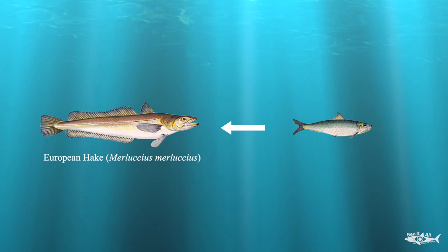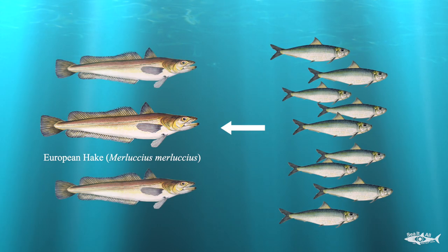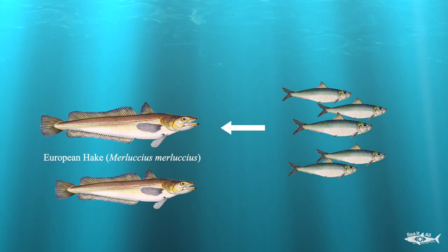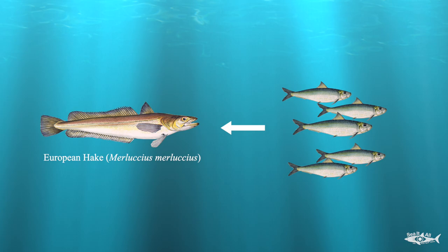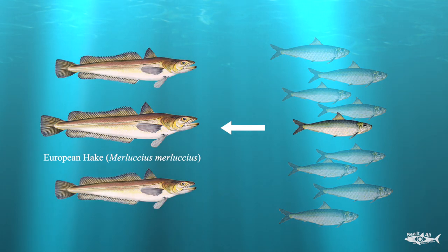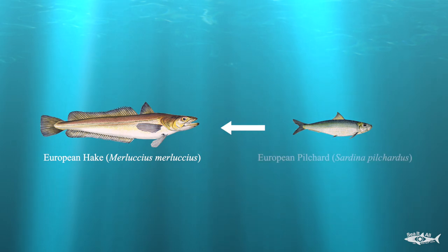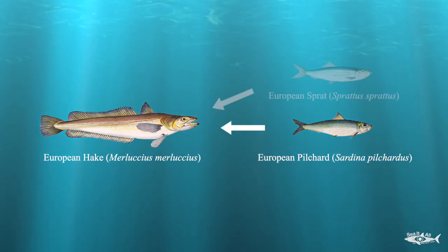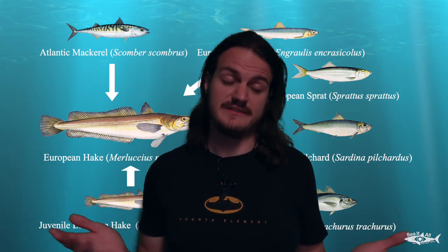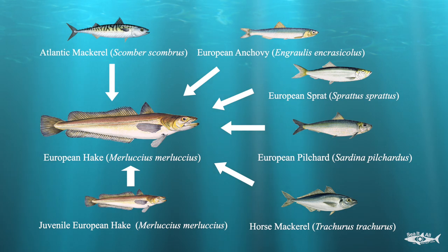Additionally, the European hake is a known predator of the European pilchard, so its carrying capacity is connected to pilchard availability. More pilchards may mean a higher carrying capacity for hake, and fewer pilchards means less food and a lower carrying capacity. This works the other way around too — less hake may cause the carrying capacity of pilchards to increase, while a greater hake stock may decrease pilchard carrying capacity due to increased mortality. In reality, this gets even more complicated since hake don't feed exclusively on pilchards — adult hakes also target European sprat, European anchovy, Atlantic mackerel, horse mackerel, and even juvenile European hake. It's a big fish-eat-small-fish world.